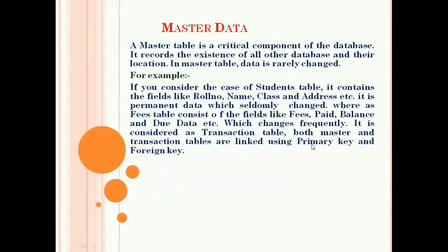The student table contains fields like roll number, name, class, and address. This is permanent data which rarely changes. On the other hand, we have a fees table which consists of fields like fees paid, balance, and due date. The data in the fees table changes frequently, so it is considered a transaction table.